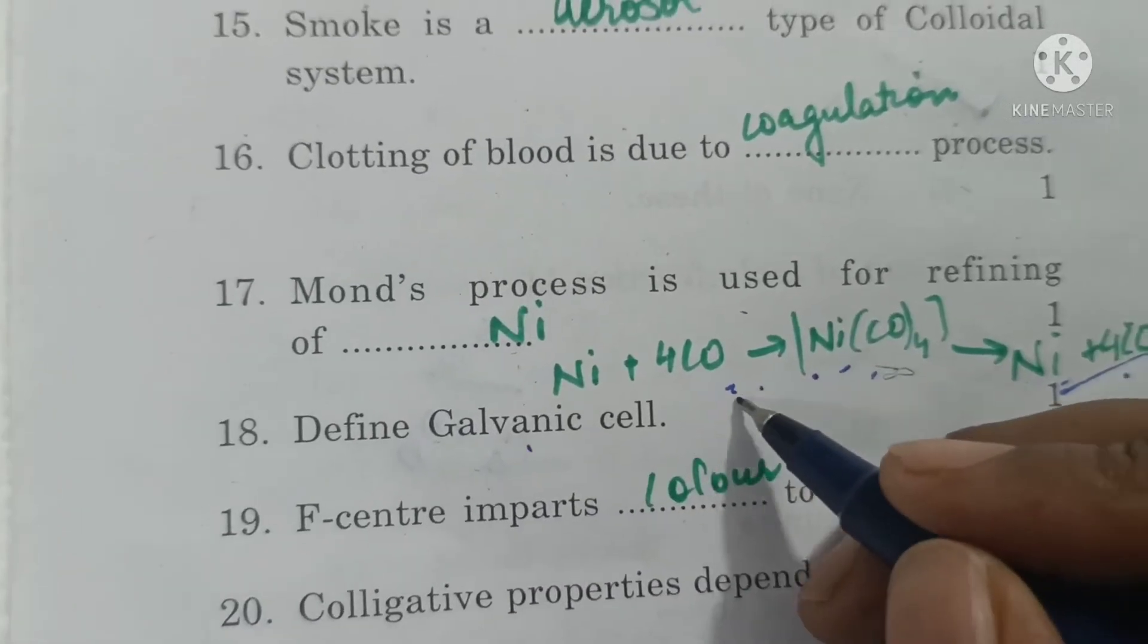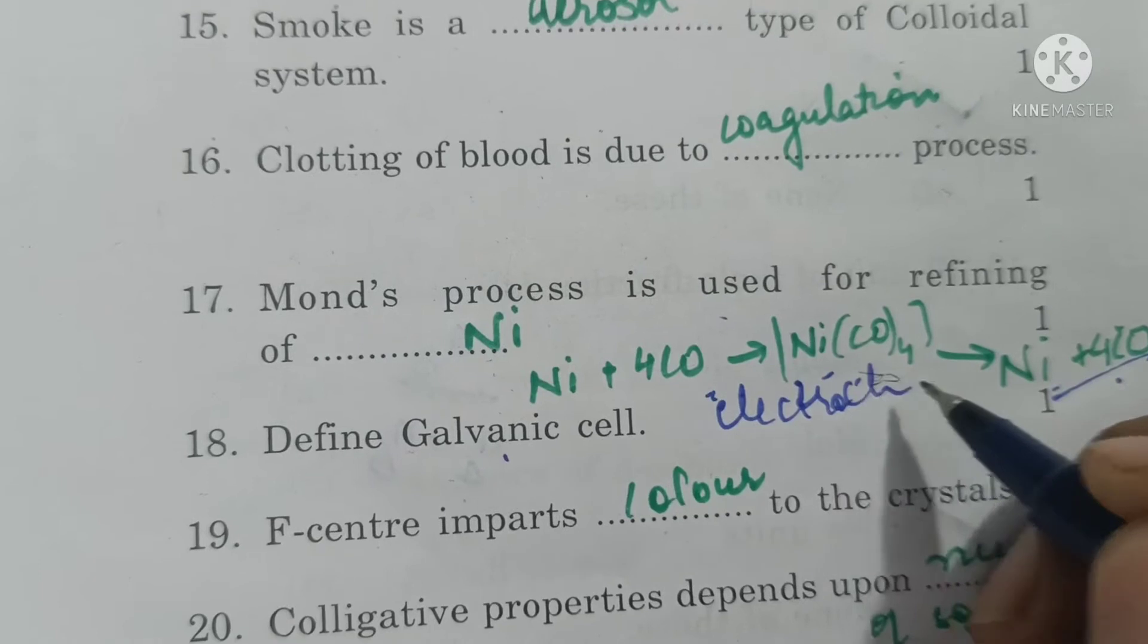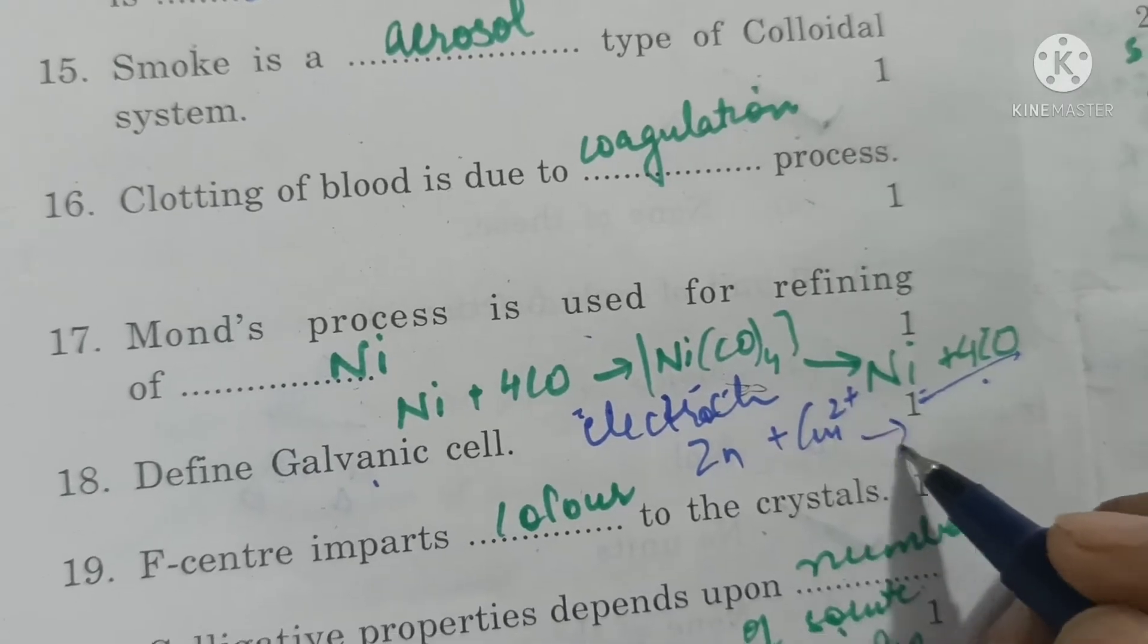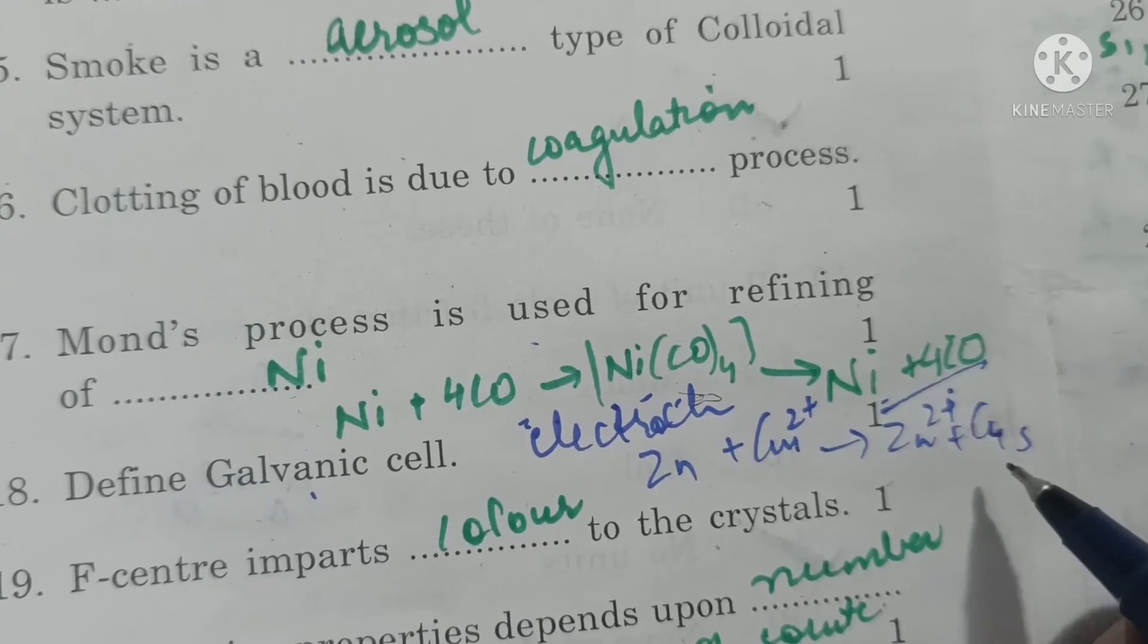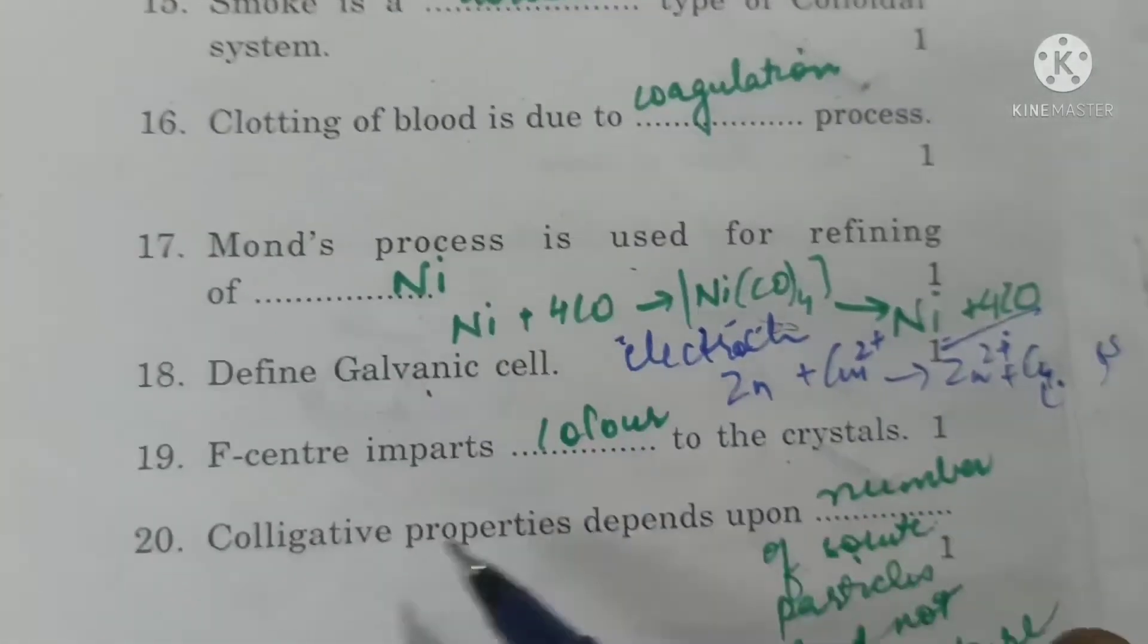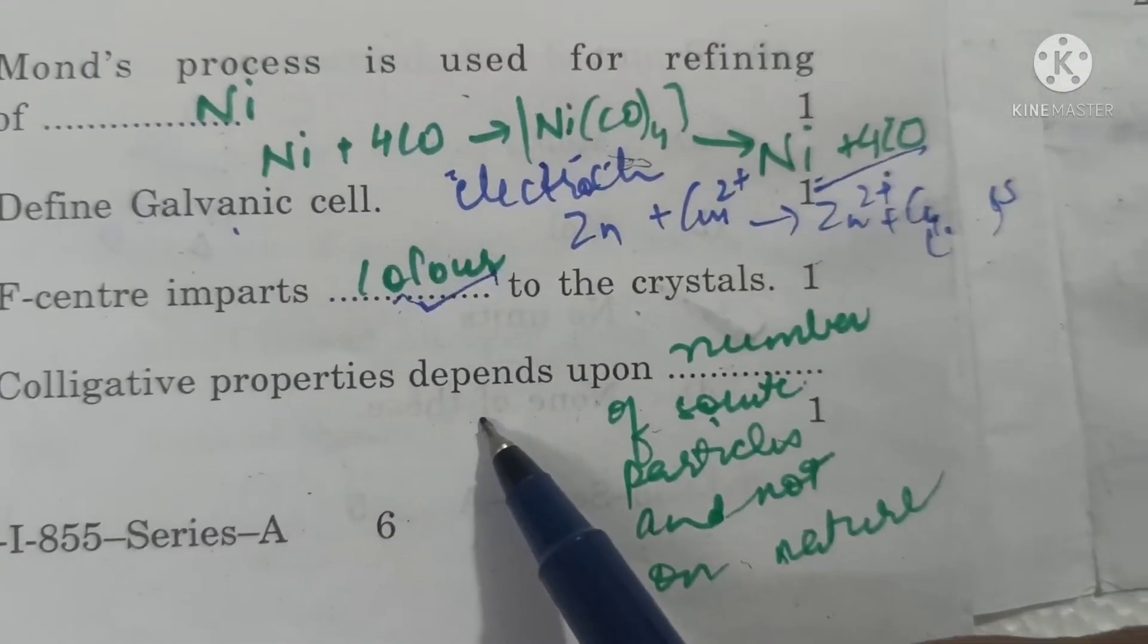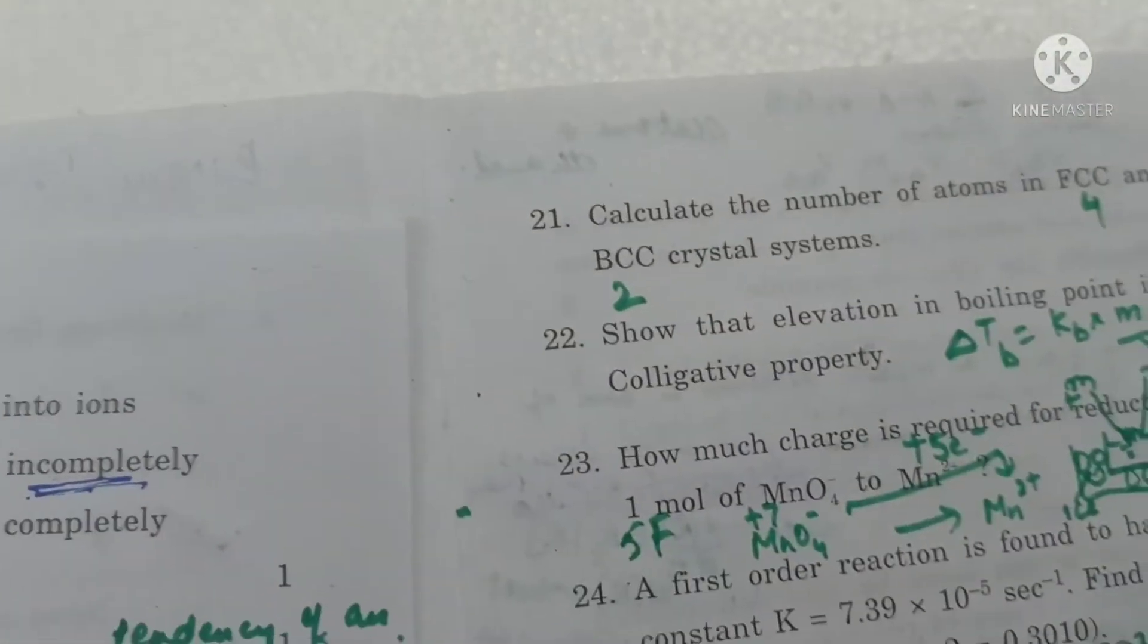Galvanic cell is the electrochemical cell where reaction between zinc solid and copper ions takes place to form zinc ions and copper solid, and electric current is produced as a result. F-centers impart color to the crystal. Colligative properties depend upon the number of solute particles and not on the nature.